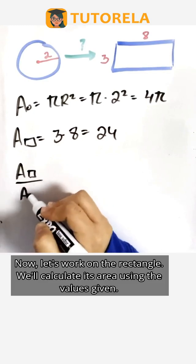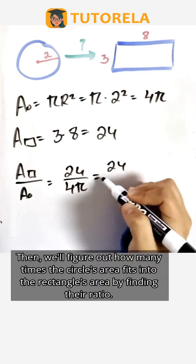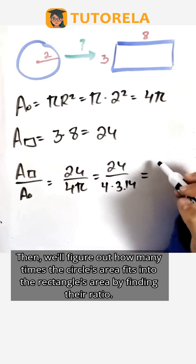Now, let's work on the rectangle. We'll calculate its area using the values given. Then, we'll figure out how many times the circle's area fits into the rectangle's area by finding their ratio.